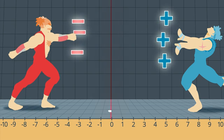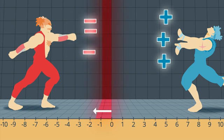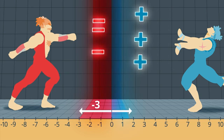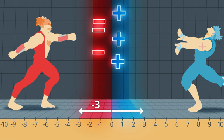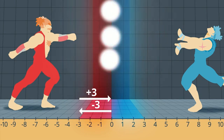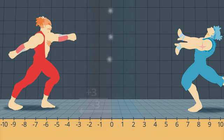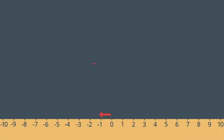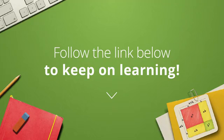You go three steps left for negative 3, and then three steps right from that point for positive 3. Adding equal and opposite numbers always equals zero. Or, if we write this as an equation: negative 3 plus positive 3 equals zero.